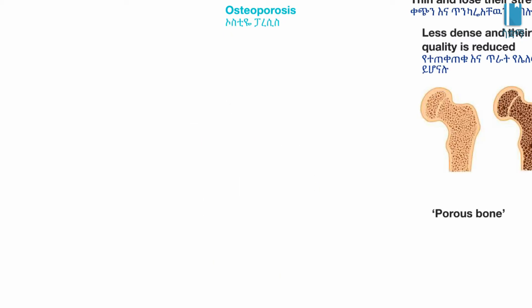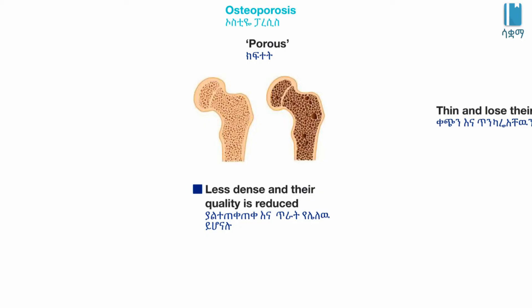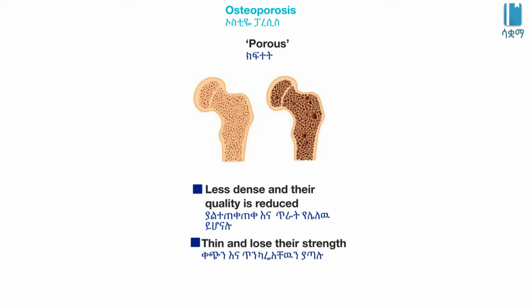Osteoporosis is a systemic bone disease characterized by reduced bone density. It makes bones thinner and more fragile, increasing the risk of fractures. The bones become weak and are more susceptible to breaks.